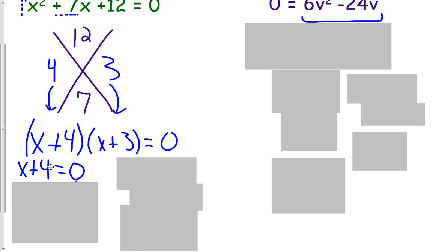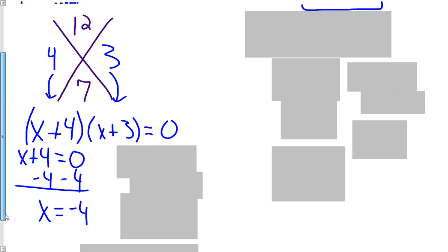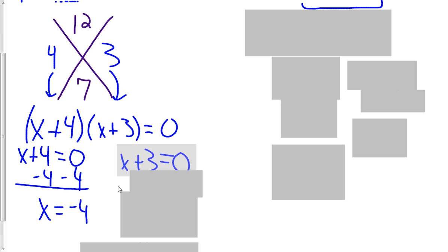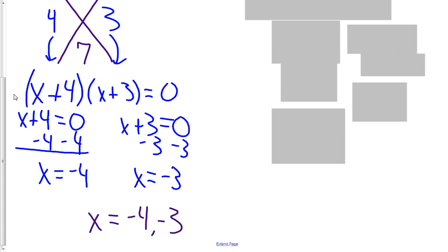x+4 = 0. We'll subtract 4 from each side. We get x equals negative 4. And we set x+3 equal to zero. Subtract 3 from each side. And x equals negative 3. So our answers are negative 4 and negative 3.